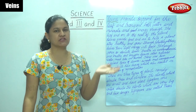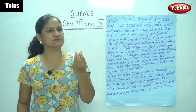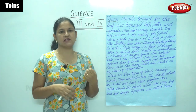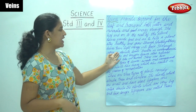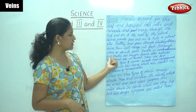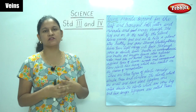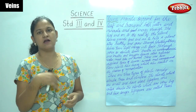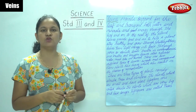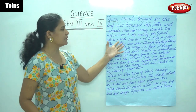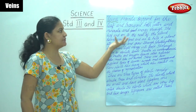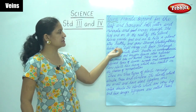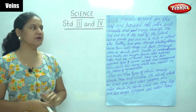On the underside of the leaves there are tiny holes present called stomata. These stomata breathe in carbon dioxide and breathe out oxygen. The oxygen given out by the leaves is used by humans and animals to breathe. Veins also transport food, water, and minerals through the leaf to the remaining parts of the plant.